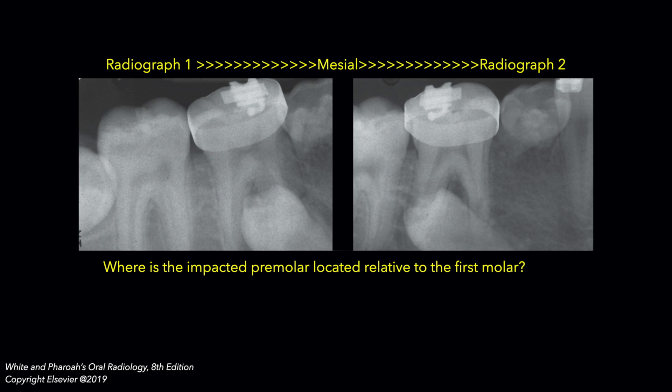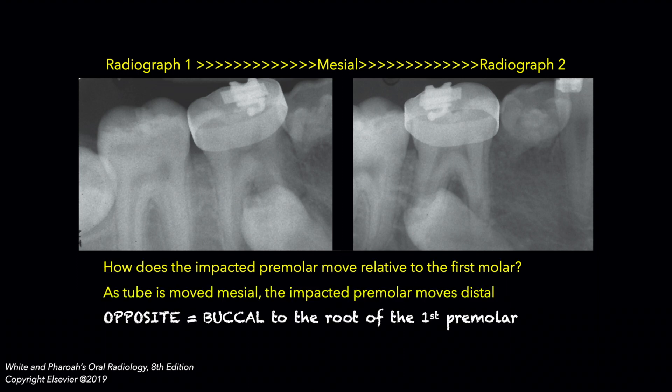Now let's go back to our original problem of localizing an impacted tooth and apply the tube shift technique. In these two periapical radiographs, we see an impacted second premolar that is superimposed over the mesial root and furcation of the mandibular first molar. Note that with the mesial tube movement, the image of the premolar appears to move distally relative to the mandibular molar roots, indicating that it is positioned buccal to these roots. As confirmation, note that the orthodontic bracket affixed on the buccal surface also moves distally with the mesial tube movement.